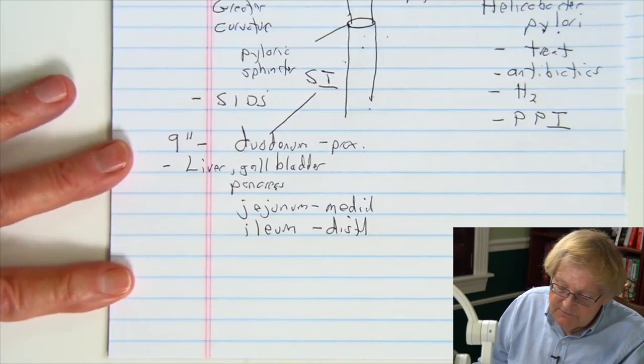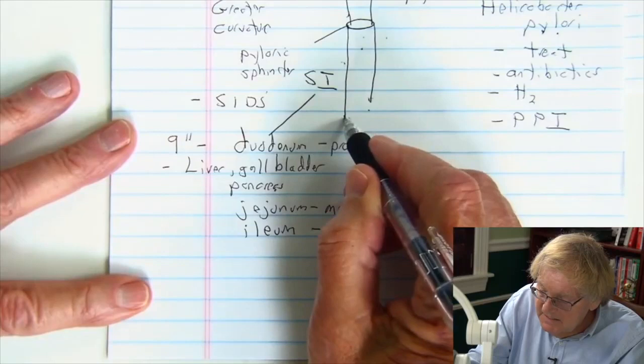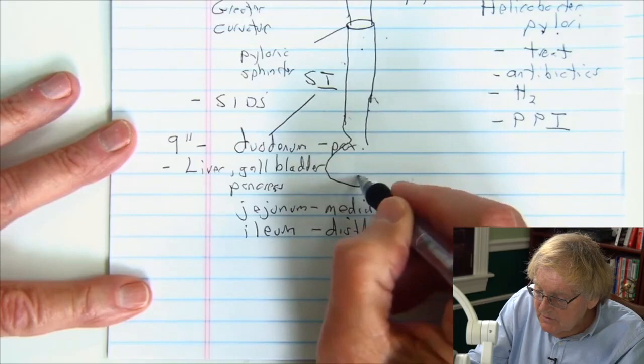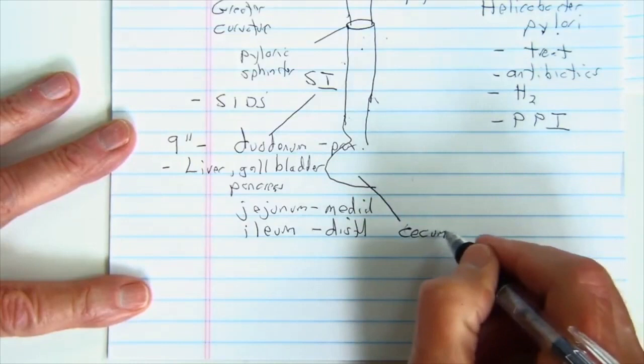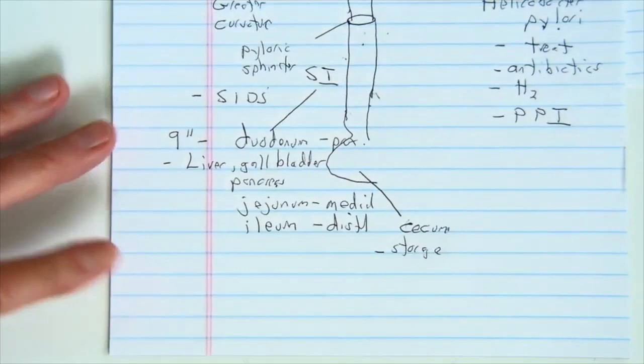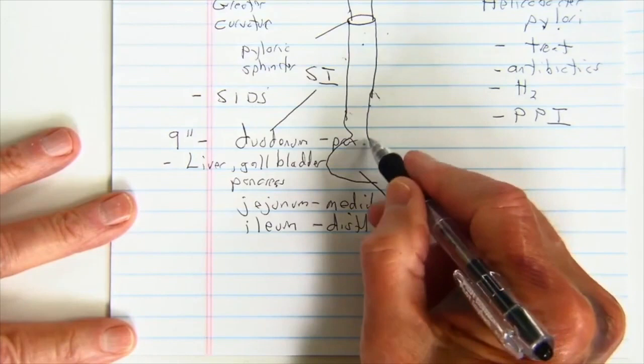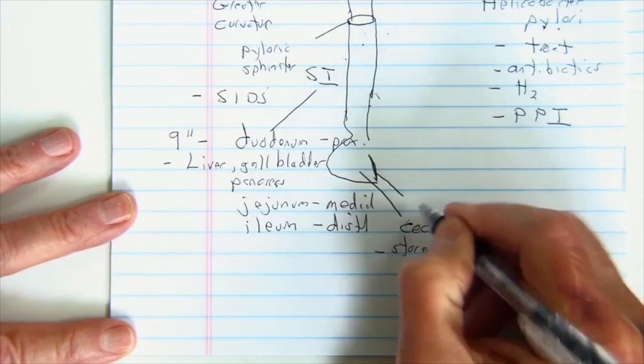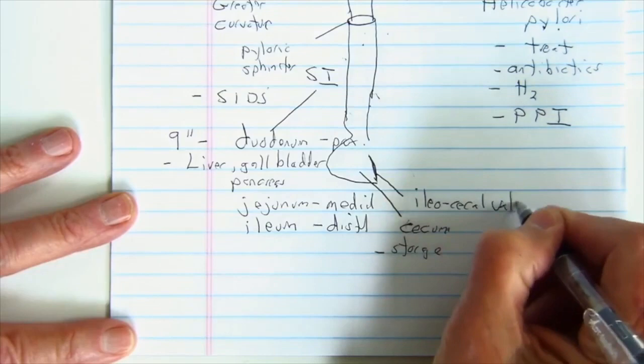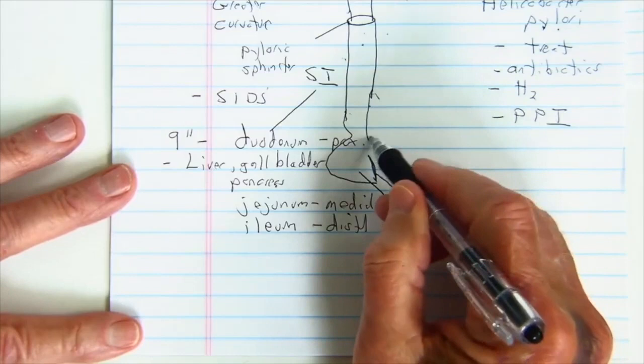Once I leave the ileum, I'm going to go into a cecum. I'm just going to bring this down and I'm going to have a little pouch here, and that's going to be called the cecum. The cecum is really a storage pouch. So that's where it's going to store the stool until I get some type of a gastrocolic reflex that says it's time to literally empty the colon. There's a little valve here, and I'm just going to kind of draw, it's kind of a floppy valve that sits right here, and that's called the ileocecal valve.